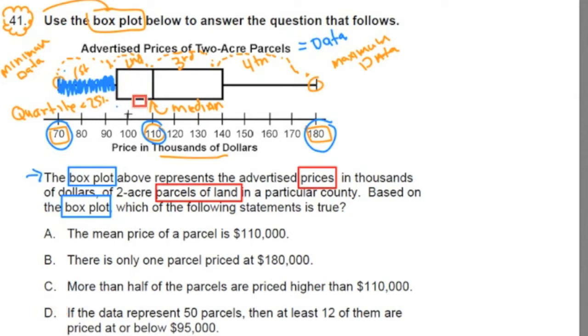Normally, team, if you see something like this, the first thing you want to do is read the question and make sure you can identify the minimum, the maximum, the median number, and have an understanding of first, second, third, and fourth quartiles.